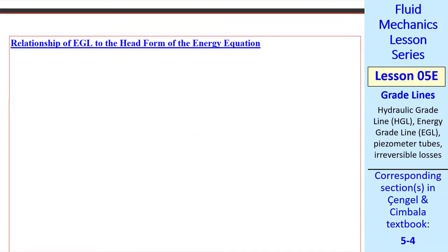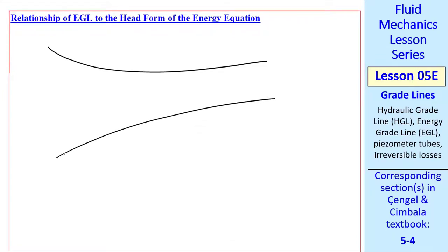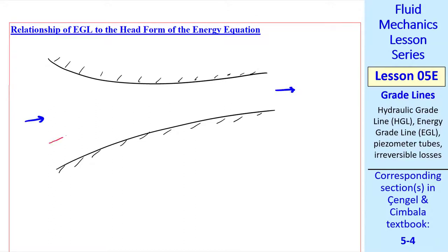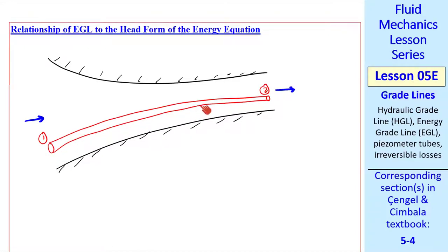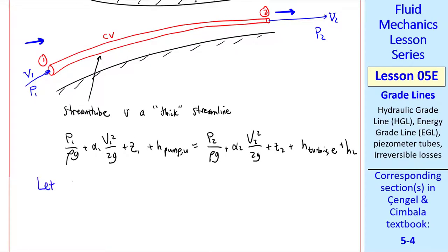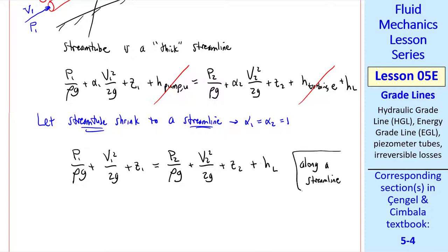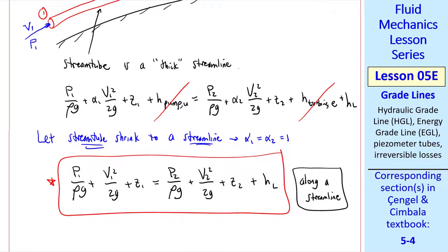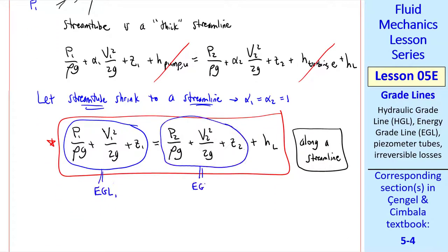Next, I want to talk about the relationship of EGL to the head form of the energy equation. Suppose we have some flow through a duct that is converging, something like this, with flow from left to right. Let me pick a control volume from inlet 1 to outlet 2. I choose a control volume that is a stream tube from location 1 to location 2. You can think of a stream tube as just a thick stream line. We have some average speed and some pressure at 1, and some average speed and pressure at 2. Since this is our control volume, we can write the energy equation between inlet and outlet 1 and 2 in head form. I'll write out the whole thing, but now we'll let the stream tube shrink to a stream line. In other words, it has no more thickness. Well, that means that we can't even calculate an alpha. In other words, alpha 1 and alpha 2 are 1. We have no pump in this control volume. We have no turbine. So we can rewrite the equation as just the remaining terms. So this equation holds along a stream line in any kind of a duct or pipe flow, where there's no pumps or turbines.